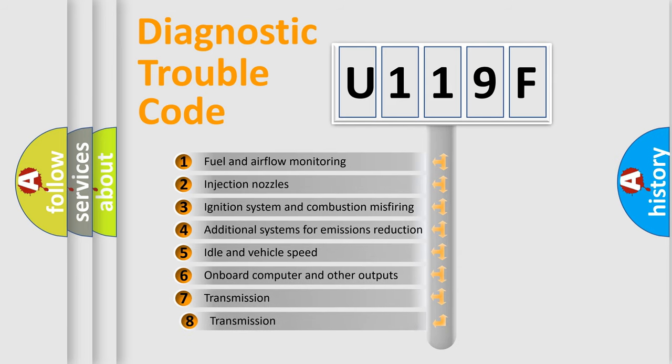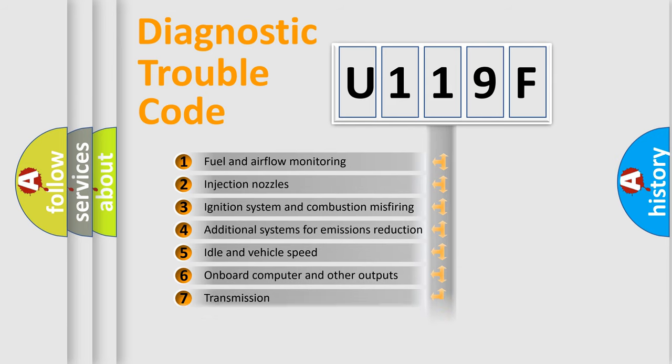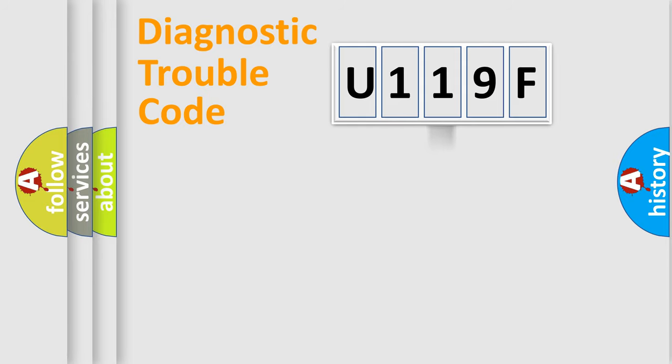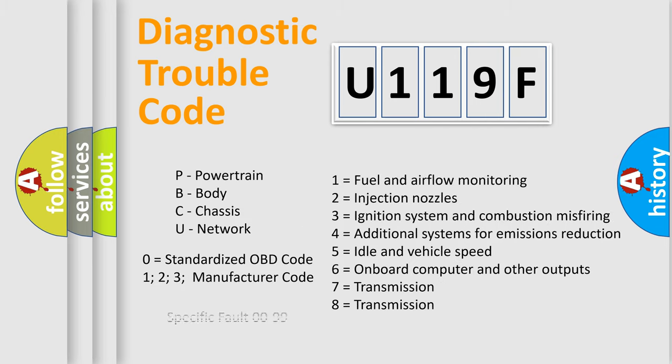The third character specifies a subset of errors. The distribution shown is valid only for the standardized DTC code. Only the last two characters define the specific fault of the group. Let's not forget that such a division is valid only if the other character code is expressed by the number zero.